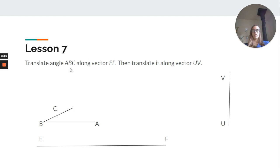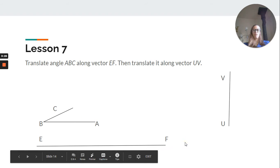Lesson 7, sequences of translations. So, we translate ABC along EF, and then we translate it along UV. So, this is two translations of ABC. Okay?